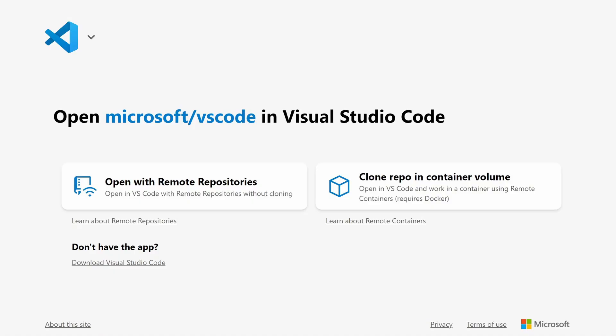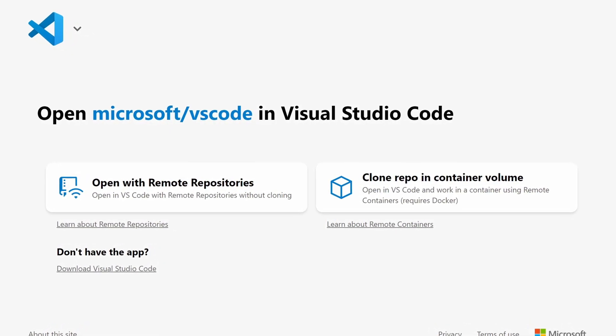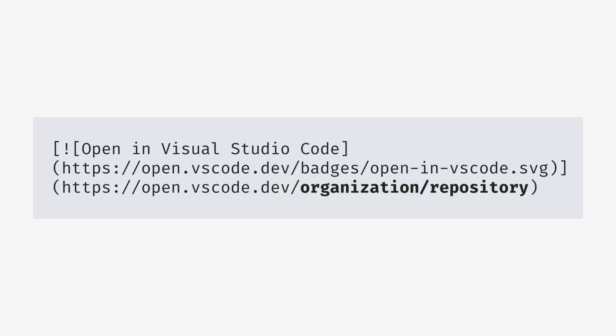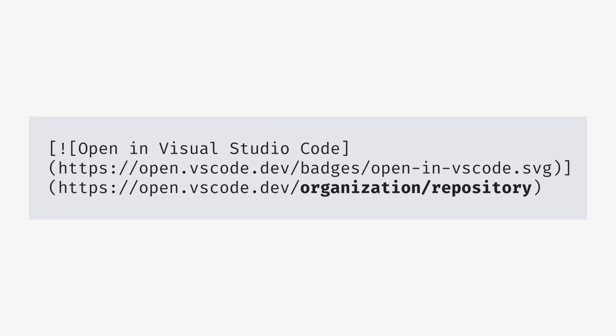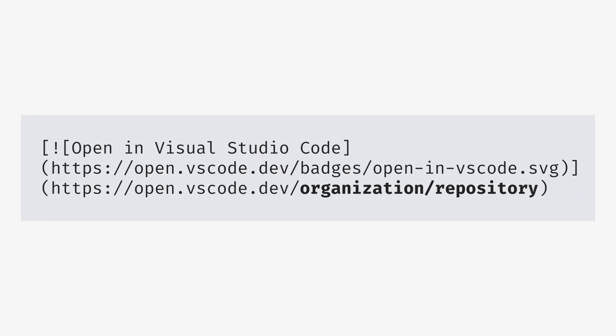There's a new Open in VS Code badge that you can use on GitHub for your repos. This will allow visitors to quickly open your repo in VS Code. This can be done by either using the Remote Repositories extension or by cloning the repo into a dev container. Clicking on the badge will bring you to a page where you can choose how to continue in VS Code. To show the badge on your repo, just add this markdown snippet to your README file and replace Organization Repository with the values for your project.